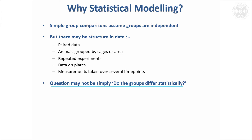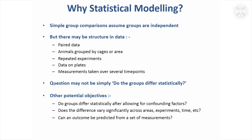The question might not be simply do the groups differ statistically — you might want to ask something a bit more elaborate than that. So other potential things you might ask are: do these groups differ statistically after allowing for some potentially confounding factors? Does the difference vary significantly in different areas, different experiments, over time? Another thing you can do with a statistical model is form a prediction — if you've got a set of measurements, you can try and predict something from them.